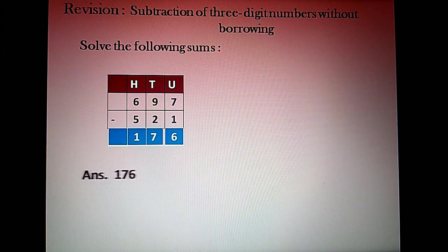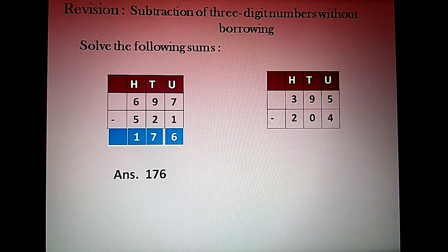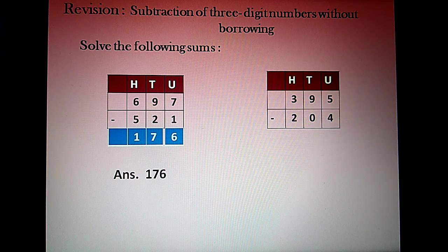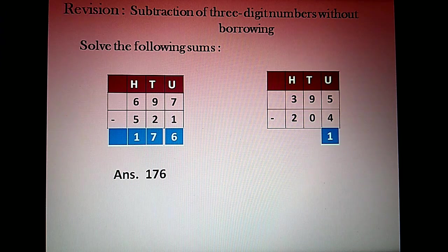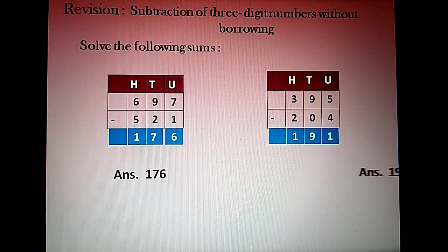Hundreds place: 6 minus 5 is 1. So our answer is 176. We'll see one more example: 395 minus 204. We start from the units place — 5 minus 4 is 1, tens place 9 minus 0 is 9, hundreds place 3 minus 2 is 1. So our answer is 191.